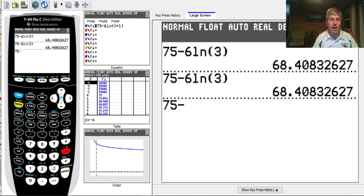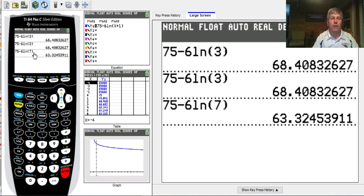So 75 minus 6 natural log of, we put in t is after 6 months, so 6 plus 1 is 7. And we get 63.32. I know there's a way to go back and edit and change that 3 and make it a 7 and not have to redo that. We can show that another time.